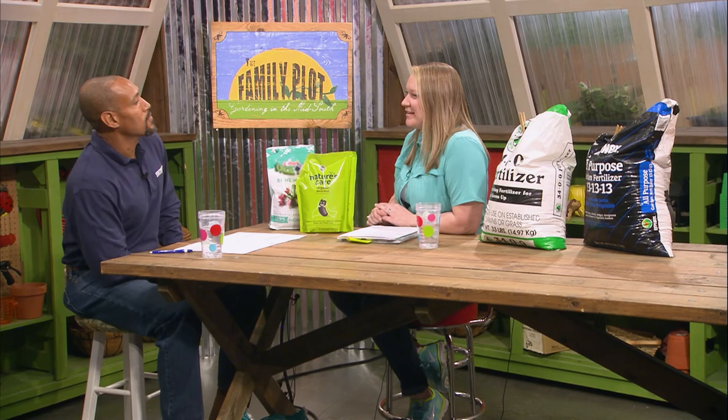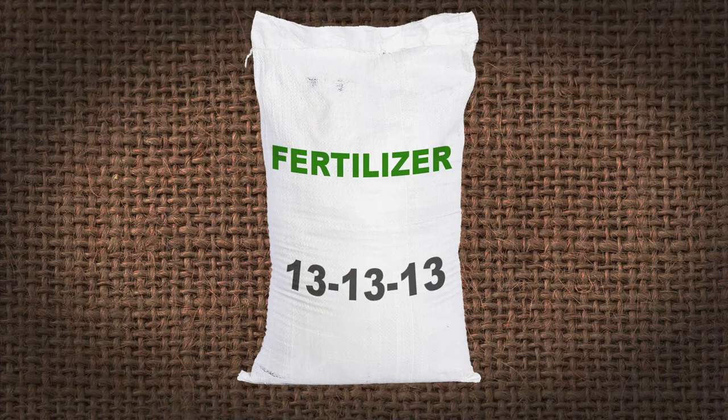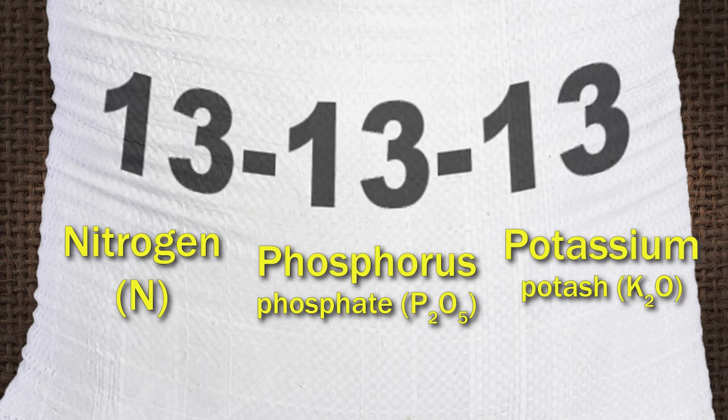Let's start by talking about the parts of fertilizer. Fertilizers are going to have three numbers that denote what type of fertilizer they are — that's known as the fertilizer analysis. For example, 34-0-0 is the bag right here. The first number is the amount of nitrogen, the second number is phosphorus, and the last number is potassium. A lot of old timers know potassium as potash. So we've got nitrogen first, phosphorus, then potassium — N, P, and K for short.